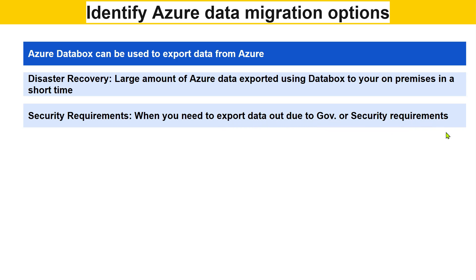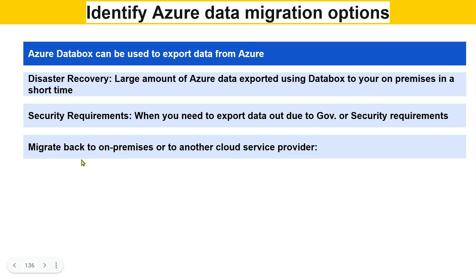Sometimes you may need to export data out from Azure due to government or security requirements — you can use the Data Box to get all your data transferred back. You might also want to migrate back to on-premises or another cloud service provider for security or government requirements. In that case you can request a Data Box and ask Azure to send it to your location.